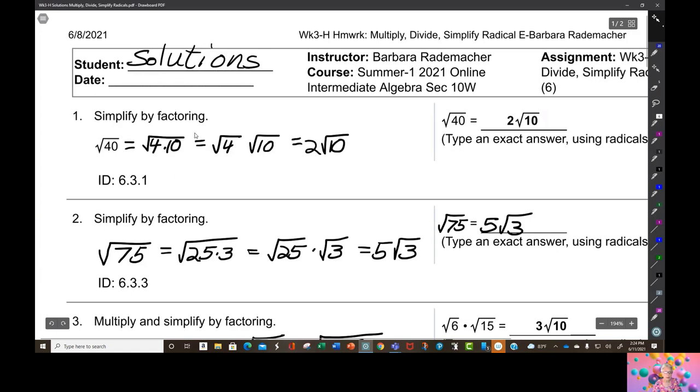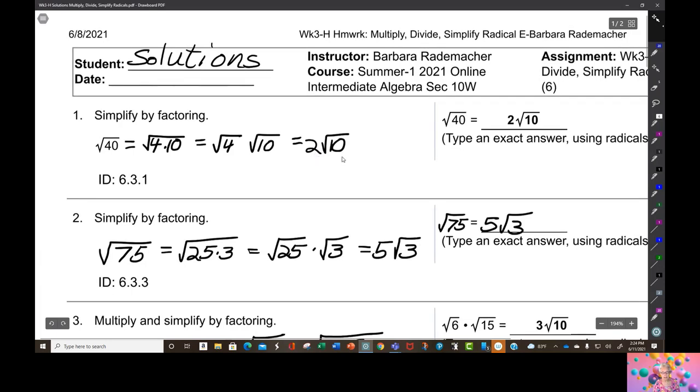So the square root of 40 is the square root of 4 times 10, which is the square root of 4 times the square root of 10. And we know that the principal square root of 4 is 2. So our answer is 2 times the square root of 10. This way we have broken down this radical into what absolutely needs to be under the square root radical and what does not need to be there.